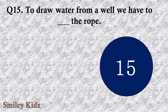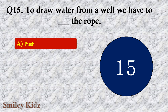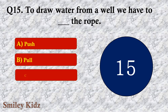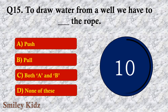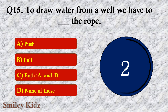Question number fifteen: To draw water from a well, we have to dash the rope. The options are A. Push, B. Pull, C. Both A and B, or D. None of these. The right answer is option B — Pull. To draw water from a well, we have to pull the rope.